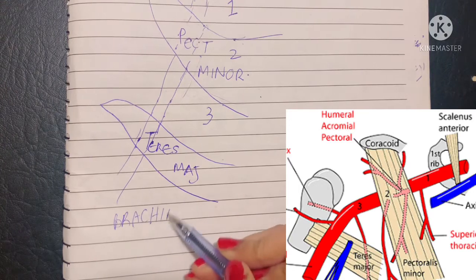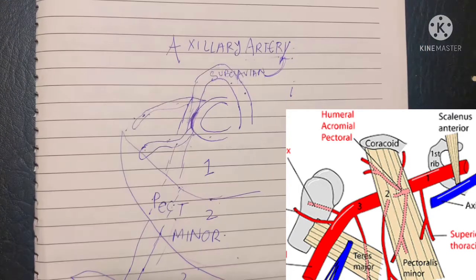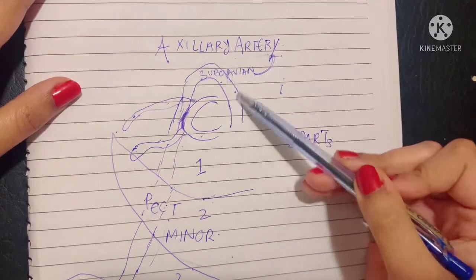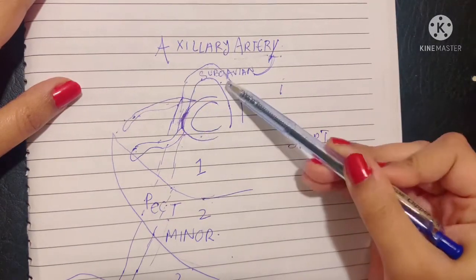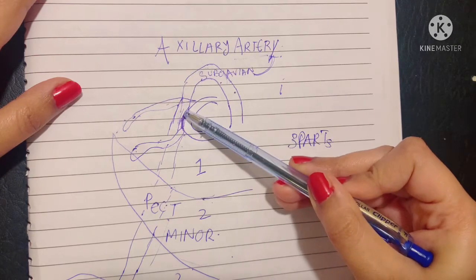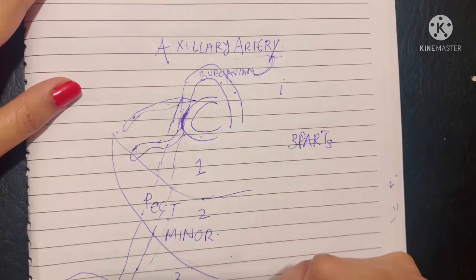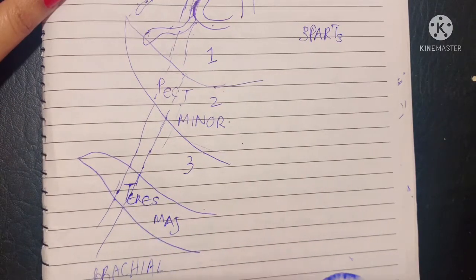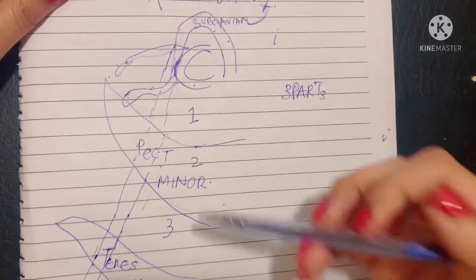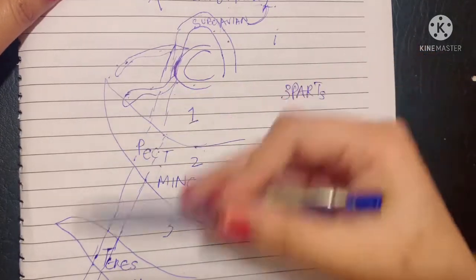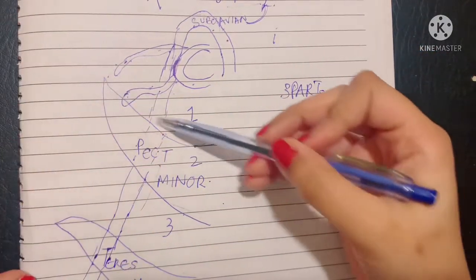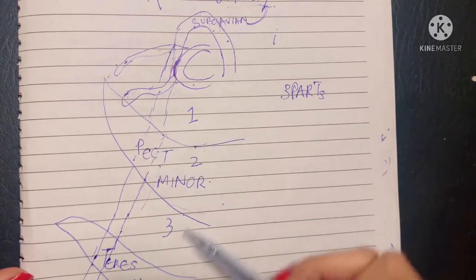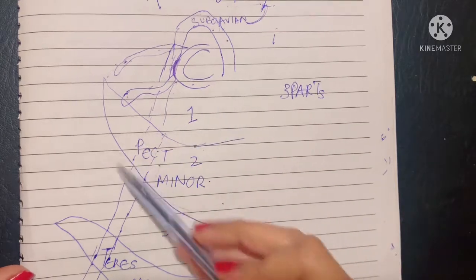So now you know the pathway and basic divisions of the axillary artery. It is a continuation of the subclavian artery from the outer border of the first rib, continues until the lower border of teres major where it becomes the brachial artery, and during its course through the axilla it is divided into three parts — first part superiorly, second part deep, and third part inferiorly — by the pectoralis minor muscle.